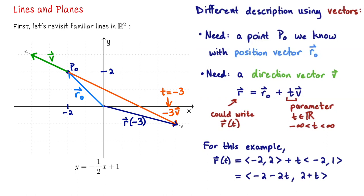If I let t equal 0, we get the position vector for the point (-2, 2) — that's where we started. If I plug in t equals 1, we get (-4, 3). If I plug in t equals -1, we get (0, 1). If I plug in -2, we get (2, 0). I plugged in whole numbers there, but you could plug in any number you like and you'll be taken to a point on this line.